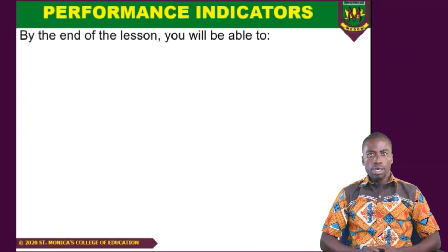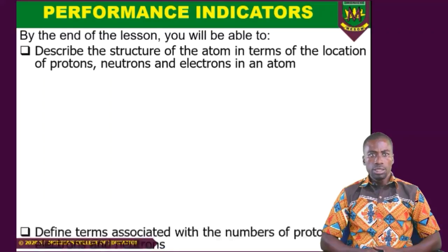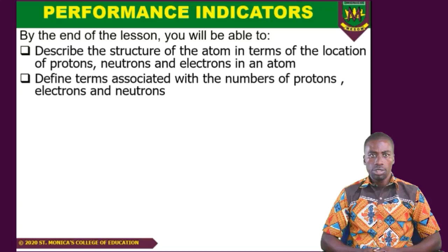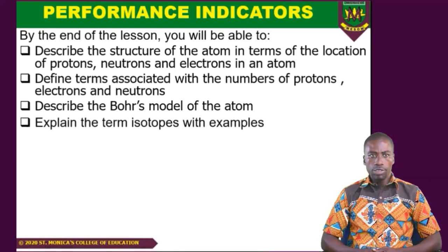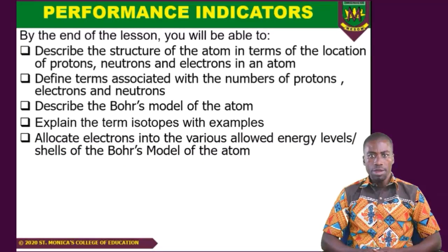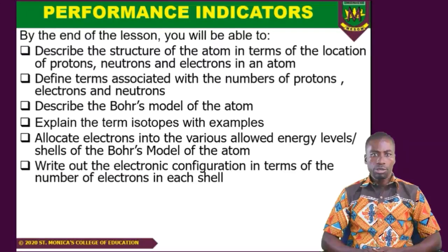So let's look at our performance indicators or specific objectives for this lesson. By the end of the lesson, you, the learner, should be able to describe the structure of the atom in terms of the location of protons, neutrons, and electrons. Define terms associated with numbers of protons, electrons, and neutrons. Describe the Bohr model of the atom, explain the term isotope with examples, allocate electrons into the various allowed energy levels or shells, and write out electron configuration in terms of the number of electrons in each shell.